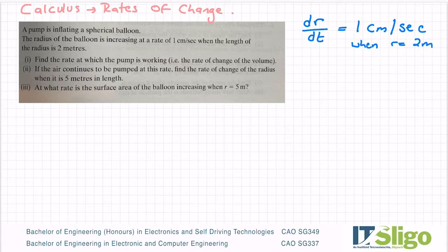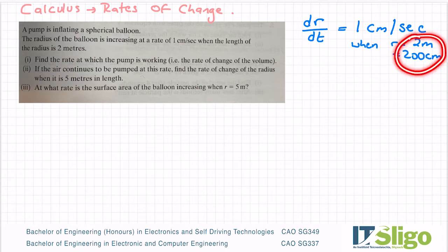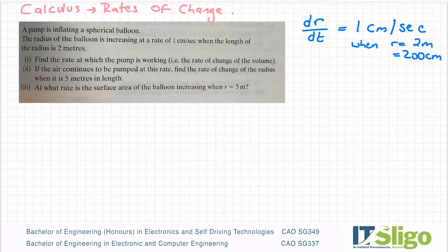Now the second thing you always keep an eye out for is units. I see centimeters, I see meters. So straight away, that gets changed to centimeters. It's much easier to change two meters to centimeters than it is to mess around with rates of change with respect to time. So 200 centimeters — that's our first line.